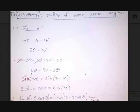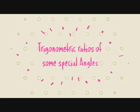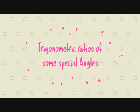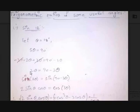Today let's discuss about trigonometric ratios of some useful angles. Specifically, we will discuss the trigonometric ratios of 18 degrees and 36 degrees.